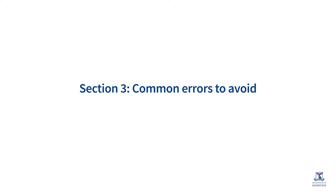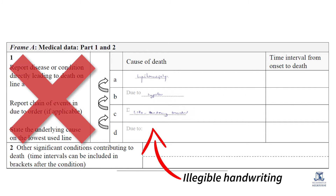Section 3: Common Errors To Avoid. Let's look at some of the most common errors made by doctors in medically certifying causes of death. Illegible handwriting is one of the most frequent errors. When the details written on the death certificate are illegible, coding and the selection of the underlying cause of death becomes difficult, even if the details provided are correct. In such cases, it becomes highly likely that the reported conditions are erroneously interpreted and coded, wasting valuable time and resources spent on both the certification and coding processes.